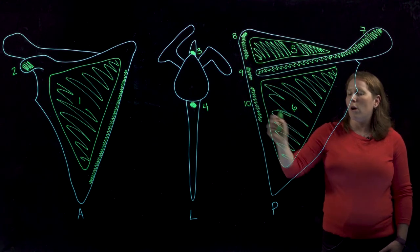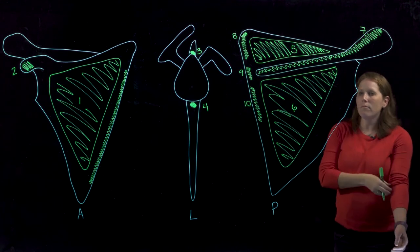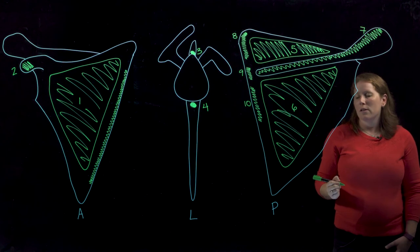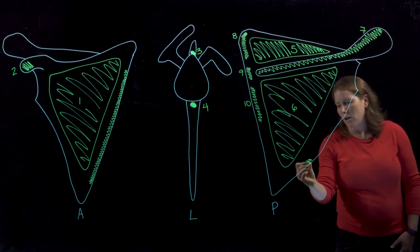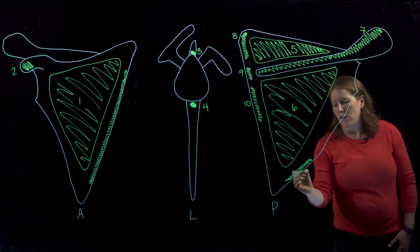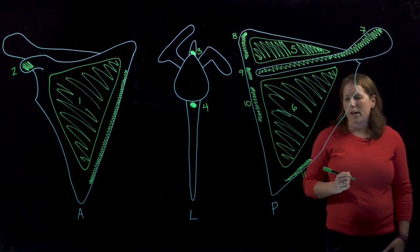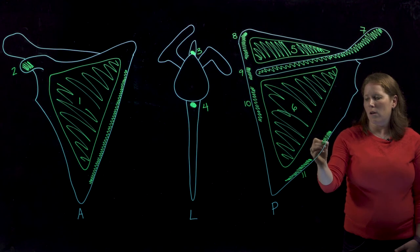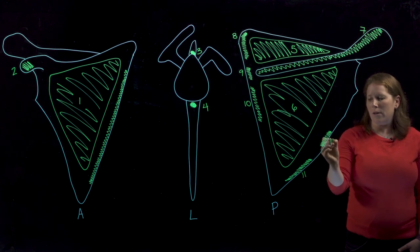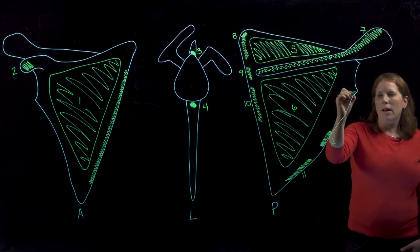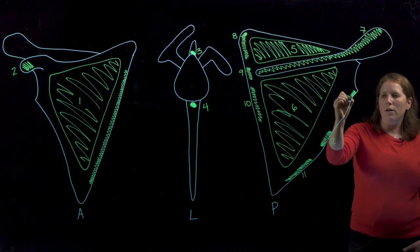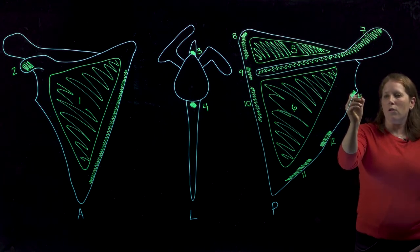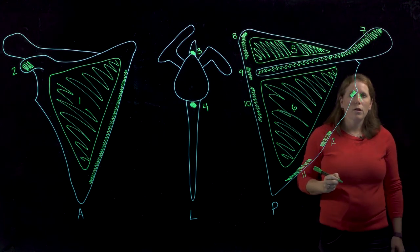We also have muscles that will attach onto the lateral border. We'll find attachments for teres major, teres minor, and I'm going to relabel here the infraglenoid tubercle where the long head of triceps brachii will attach.